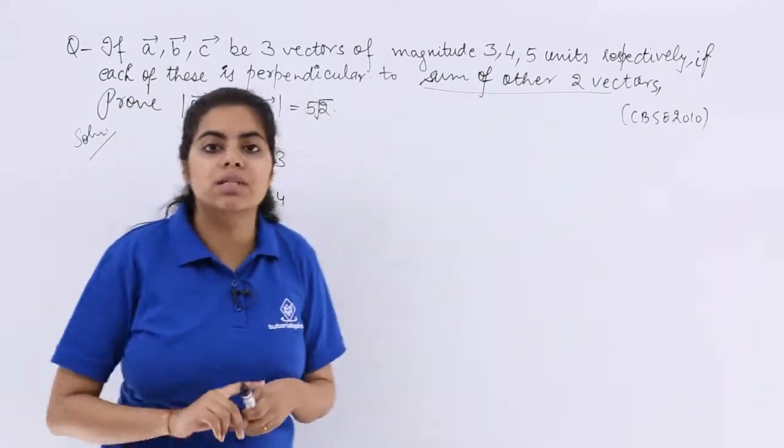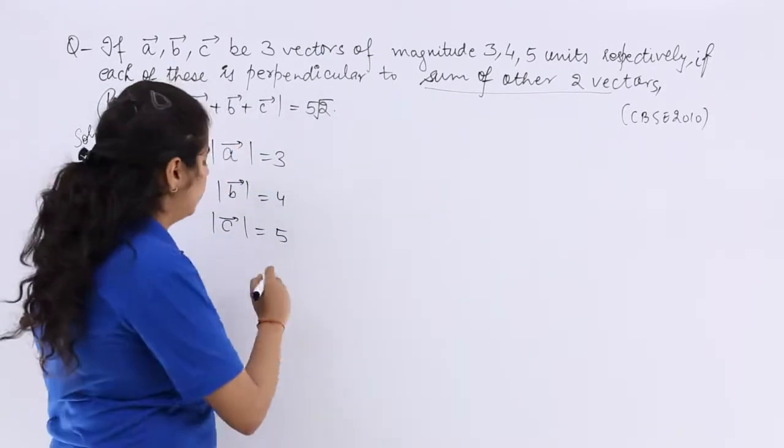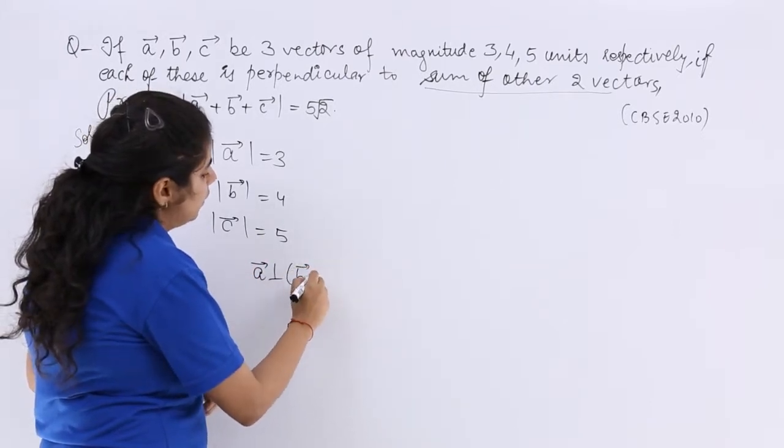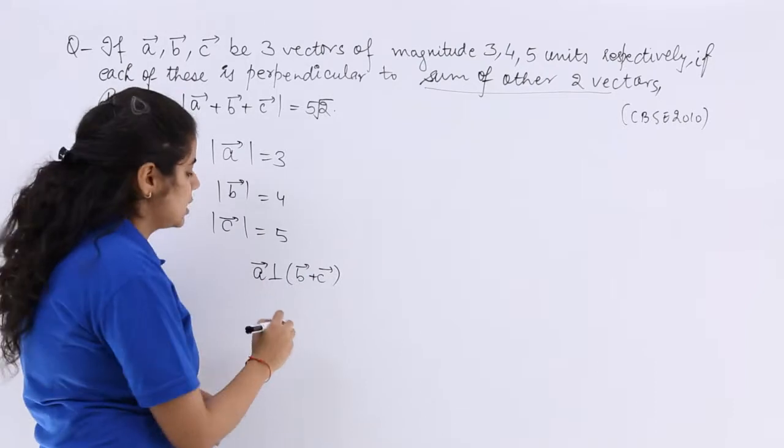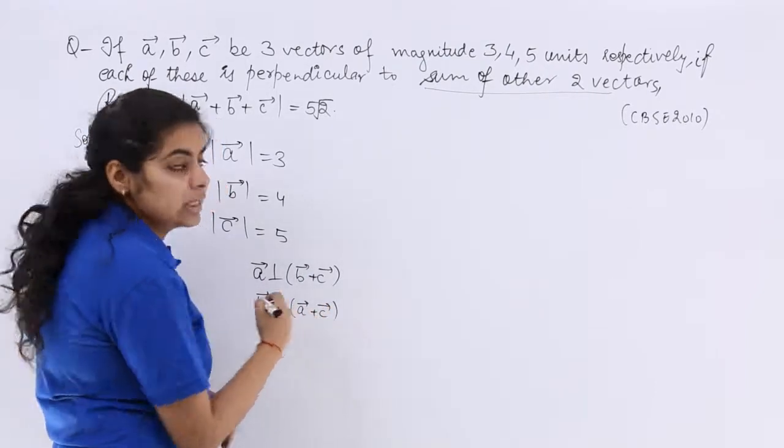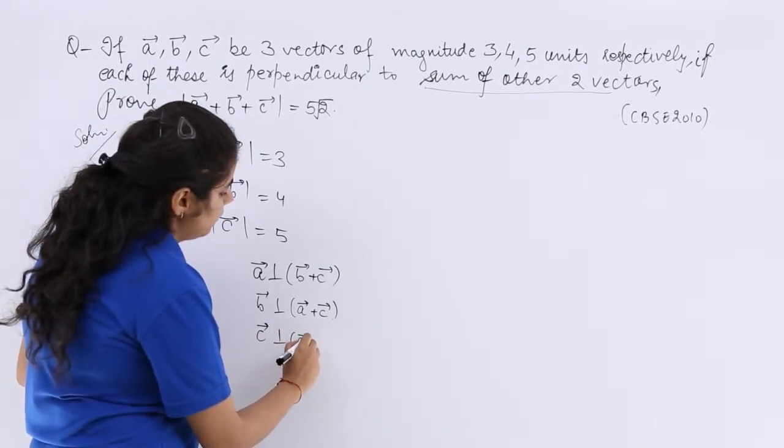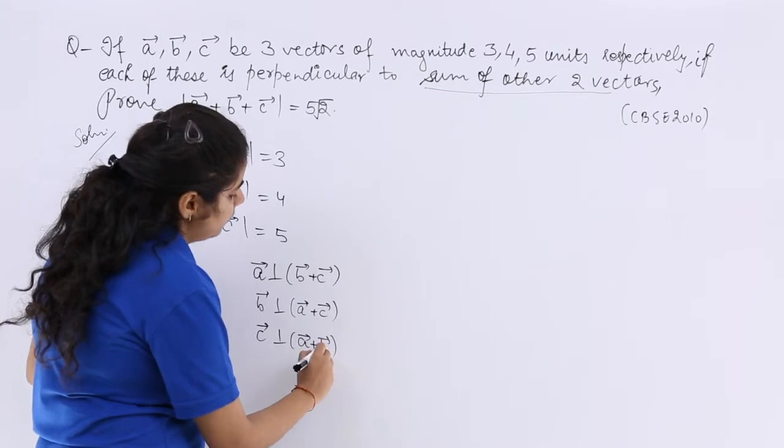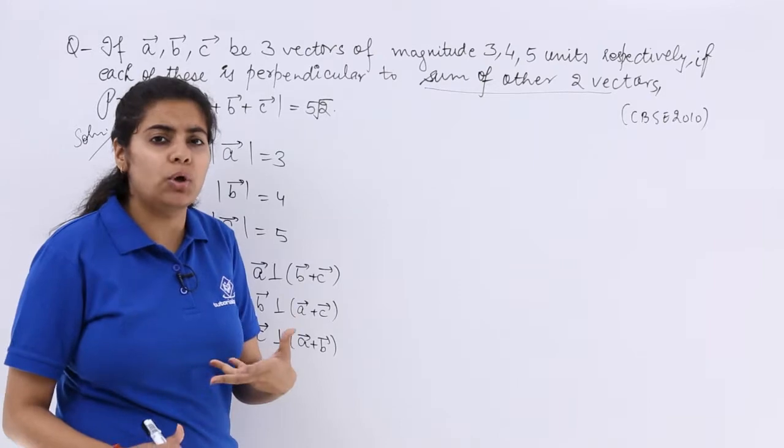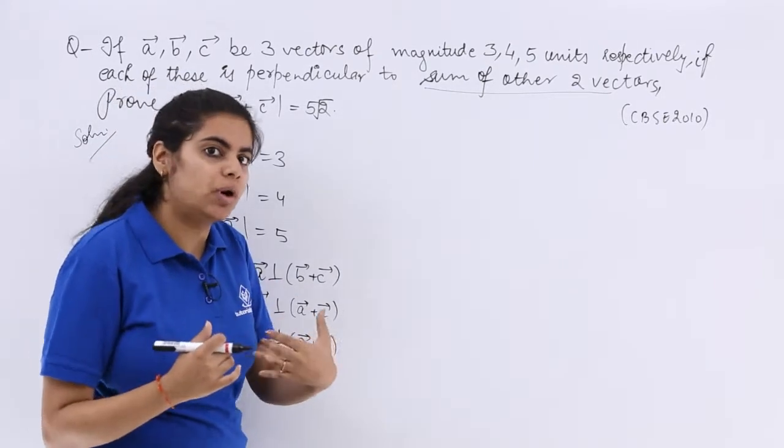If each of these vectors is perpendicular to the sum of other 2 vectors, means 1 vector is perpendicular to the sum of other 2 vectors. Means the first case prevails, the second case also prevails, the third case also prevails. Now if the perpendicularity has been established like that, what can you talk about the dot product? Because theta is 90 degrees, so the dot product is 0.